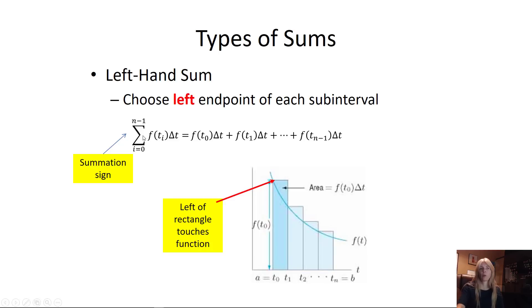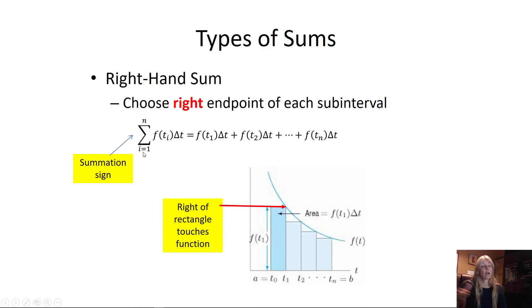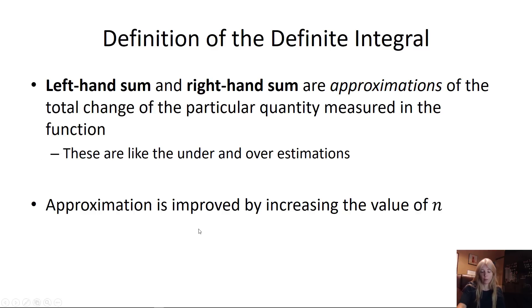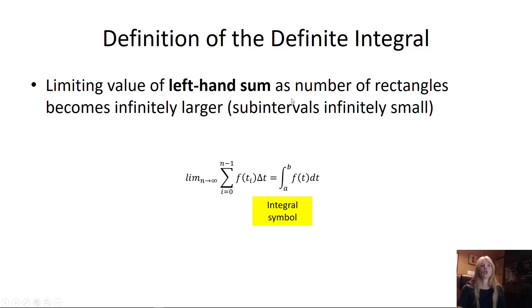If I choose the left endpoint of each subinterval, I go from 0 to n−1. For a decreasing function, that's actually an overestimate. If I choose the right endpoint, I'm below the function — I start one over and go to all the values on the right. Left-hand sum and right-hand sum are just approximations. To improve accuracy, we increase n — we let n go to infinity, and that's integration.